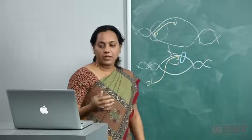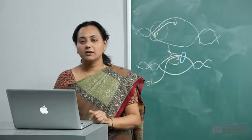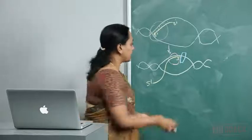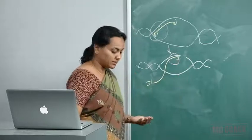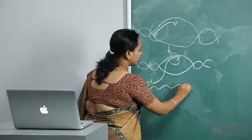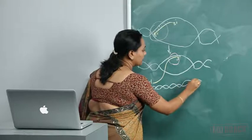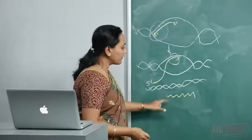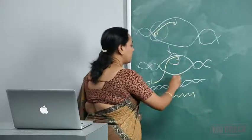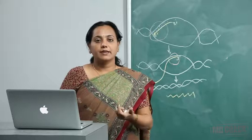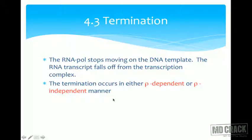The RNA polymerase stops moving on the DNA template, and the RNA transcript falls off from the transcription complex. There are two different ways in which termination can happen: one is called rho-dependent termination and the other is called rho-independent termination.